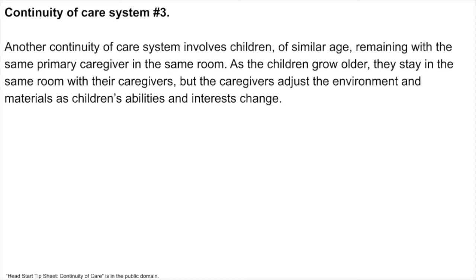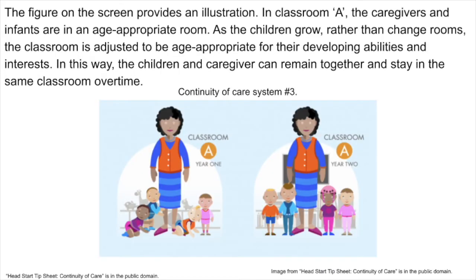Another continuity of care system involves children of similar age remaining with the same primary caregiver in the same room. As the children grow older, they stay in the same room with their caregivers, but the caregivers adjust the environment and materials as children's abilities and interests change. The figure on the screen provides an illustration. In classroom A, the caregivers and infants are in an age-appropriate room. As the children grow, rather than change rooms, the classroom is adjusted to be age-appropriate for their developing abilities and interests, allowing children and caregiver to remain together over time.